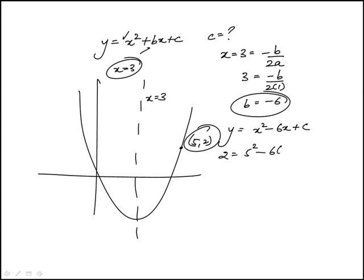So I'm replacing x with 5 and y with 2. So this is 25 minus 30 plus c, this is 2, minus 5 plus c. I add 5 to both sides, c is 7. So the answer is 7.